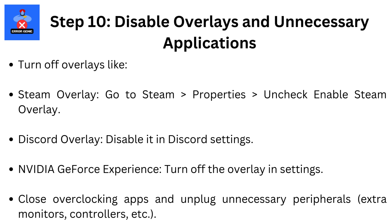Step 10: Disable Overlays and Unnecessary Applications. Turn off overlays like Steam Overlay — go to Steam, then Properties, then uncheck Enable Steam Overlay. For Discord, disable the overlay in Discord Settings. For NVIDIA GeForce Experience, turn off the overlay in Settings. Close overclocking apps and unplug unnecessary peripherals such as extra monitors, controllers, etc.